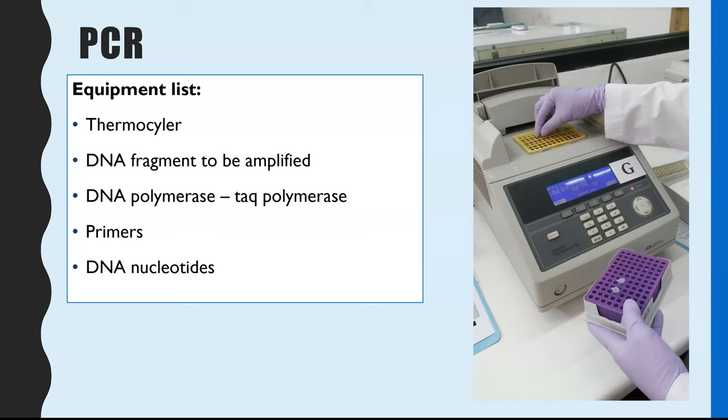So whereas our DNA polymerase would probably denature at temperatures around 40 or 50 degrees, TAC polymerase, the optimum is actually 72 degrees C, and it won't denature until you reach temperatures over 100 degrees C. And we'll come to why that's important later.